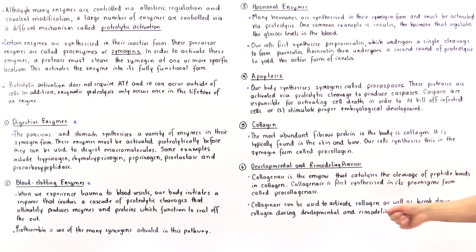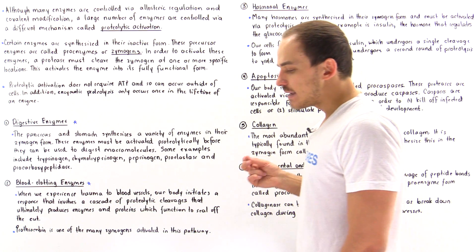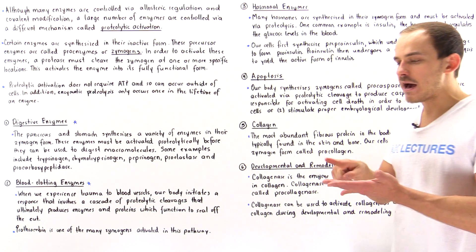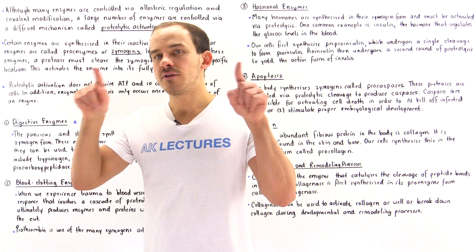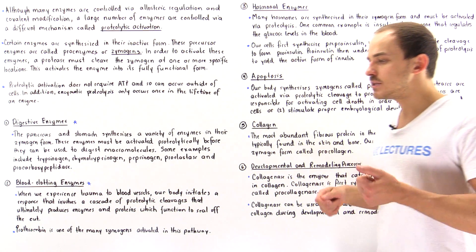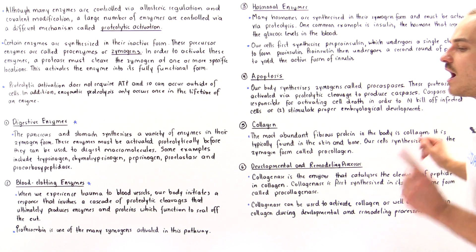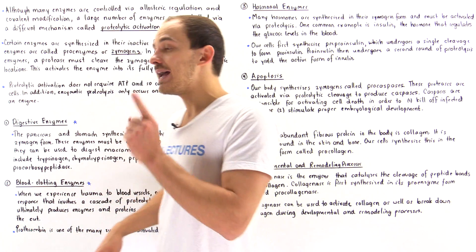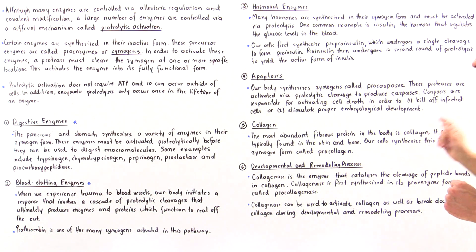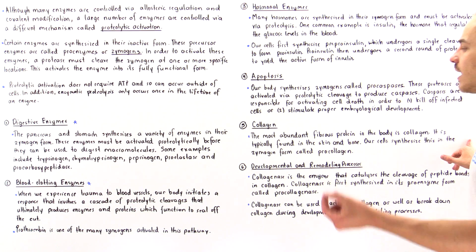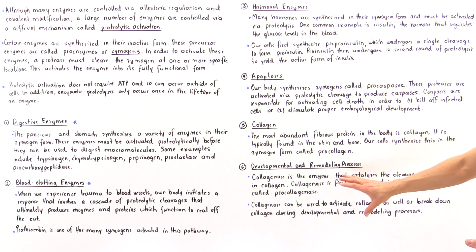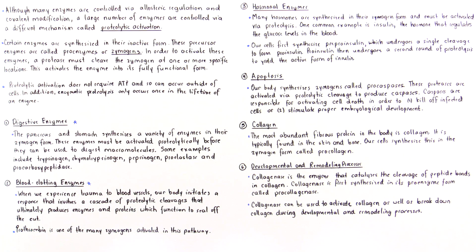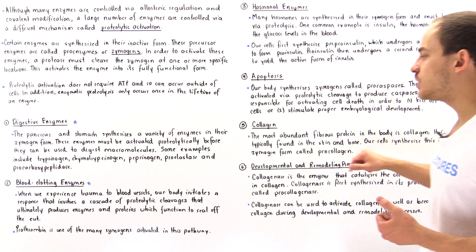Number five: the most common fibrous protein found inside our body — found in bone, skin, and generally in the extracellular environment surrounding our cells — is collagen. Collagen must be activated from its zymogen form, known as procollagen. We also have an enzyme called collagenase, which is responsible for activating procollagen into collagen.